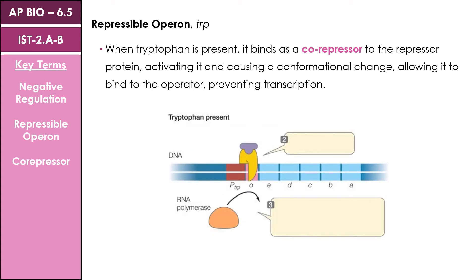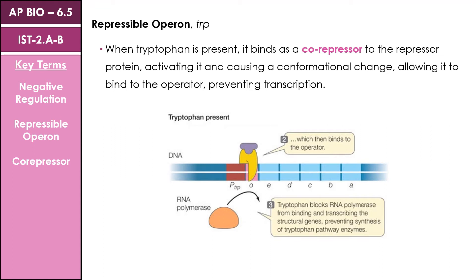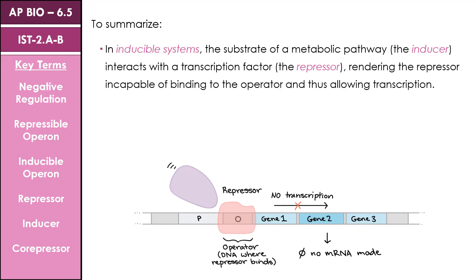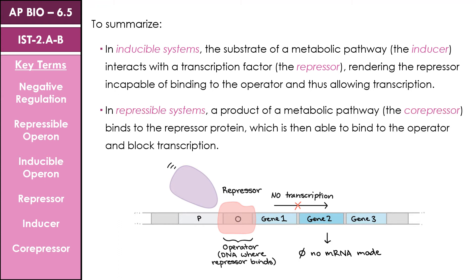Once our repressor is activated, it is able to bind to the operator sequence, which causes RNA polymerase to no longer be able to bind, and thus prevents the transcription of the genes within that gene sequence. Before we start looking at some eukaryotic mechanisms, let's summarize those negative regulatory mechanisms within the prokaryotic genome — these being the inducible systems where we have an inducer operating with our transcription factor, also known as a repressor in this system, causing the repressor to no longer be able to bind to the operator and allowing RNA polymerase to transcribe the genes.